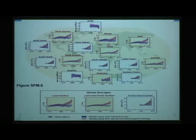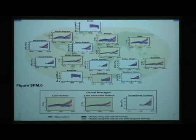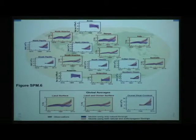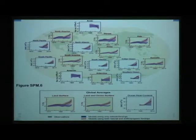And so that's how we attribute that at least since 1950, about 50% of the warming is due to anthropogenic carbon dioxide and methane.